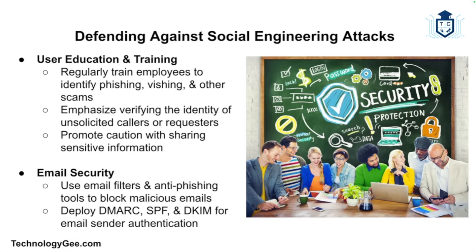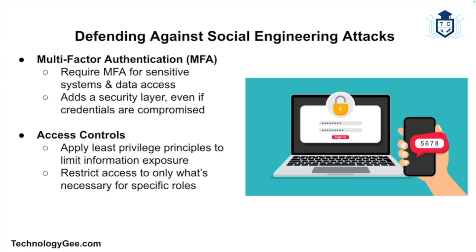Defending against social engineering attacks requires a combination of technical measures, user education, and organizational policies. First, regularly train employees to recognize and respond to social engineering attacks, including identifying phishing emails, verifying the identity of callers, and being cautious with unsolicited requests. Implement email filtering and anti-phishing solutions to block malicious emails and attachments, and use technologies like DMARC, SPF, and DKIM to authenticate email senders. Implement multi-factor authentication for accessing sensitive systems and data, adding an extra layer of security even if login credentials are obtained. Also implement strict access controls and least privilege principles.